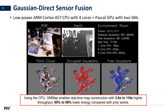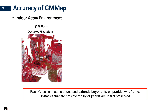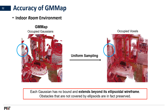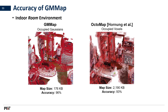In addition, our energy consumption is 69% to 98% lower than prior works. In addition to throughput and energy, we compared the accuracy and compactness of the GM map against state-of-the-art frameworks. Recall that each Gaussian distribution has no bound and extends beyond their ellipsoidal wireframes. Thus, objects that are not well covered by ellipsoids are in fact well preserved when we plot the occupied region after uniformly sampling the map at a fixed voxel resolution. Due to the flexibility of Gaussian representations, GM map for this indoor room environment requires 176 kilobytes, which is more than an order of magnitude lower than OctoMap at similar accuracy.